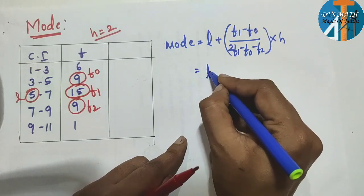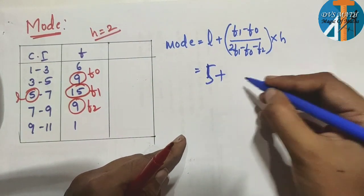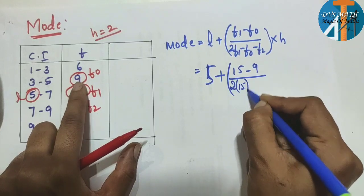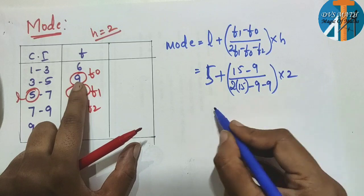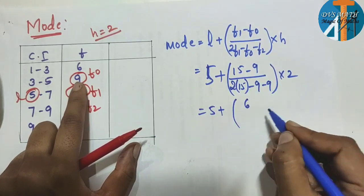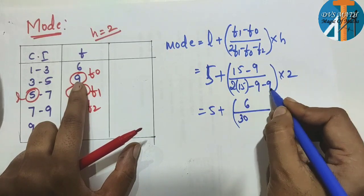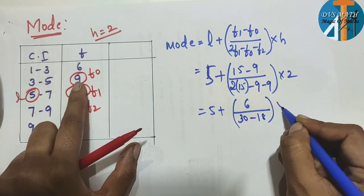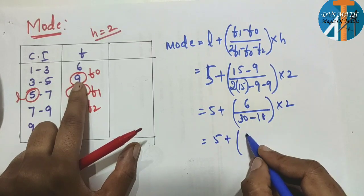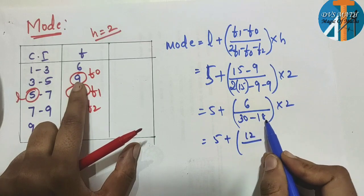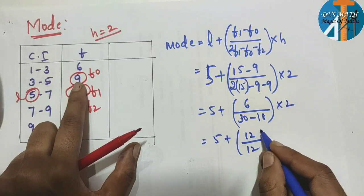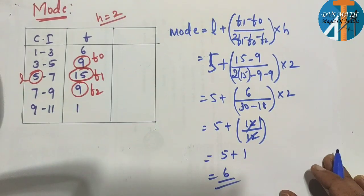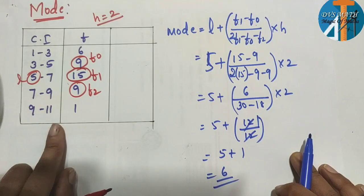Substituting: L=5, F1=15, F0=9. So mode = 5 + (15−9) / (2×15 − 9 − 9) × 2 = 5 + 6 / (30 − 18) × 2 = 5 + 6/12 × 2 = 5 + 1 = 6. So the answer is mode = 6. In the last exam, the mode question will be asked.